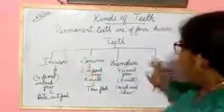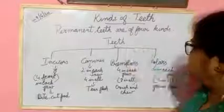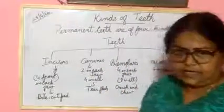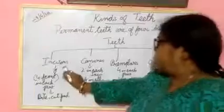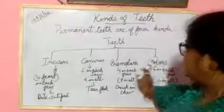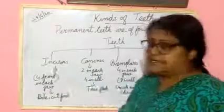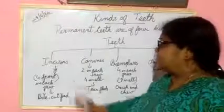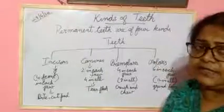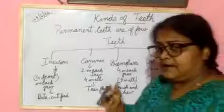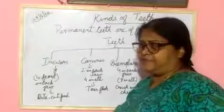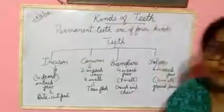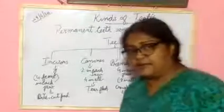This is the flow chart of kinds of teeth. Teeth is divided into four parts: incisor, canine, premolar and molar. Incisor — there are eight altogether. Four in upper and four in lower, in front. And it is used to bite and cut the food.